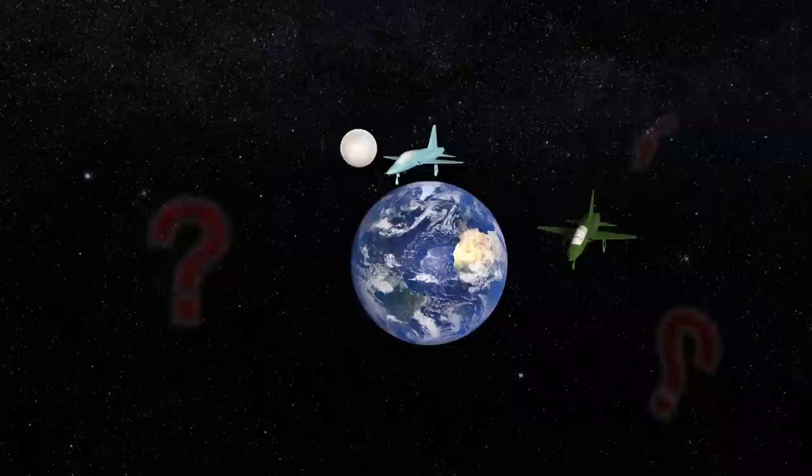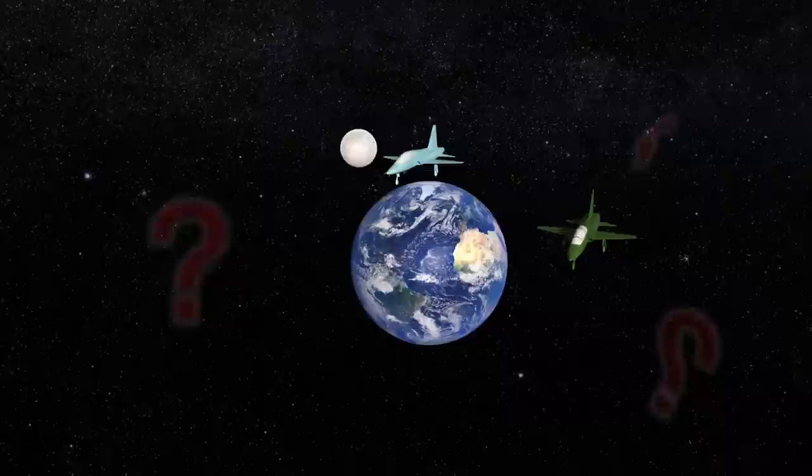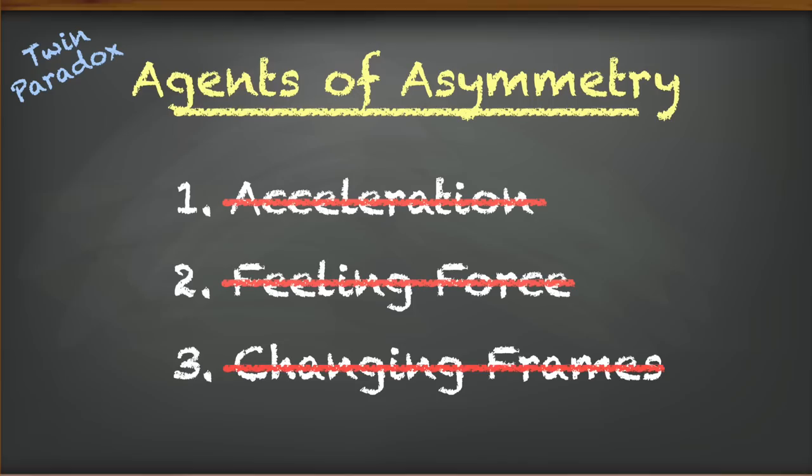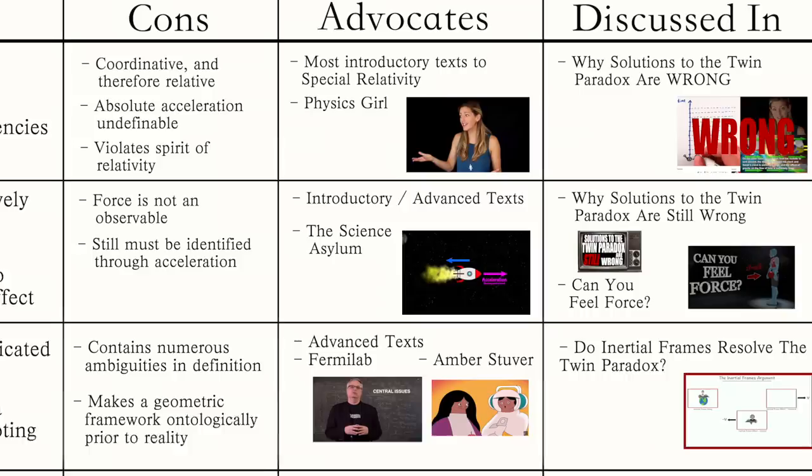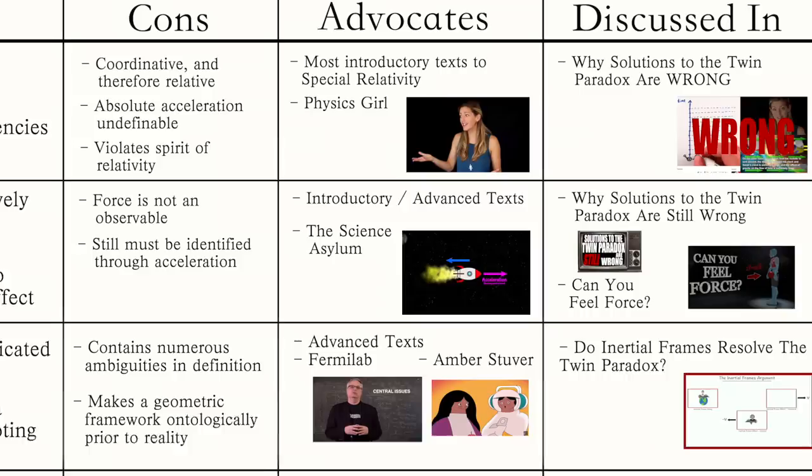So what does this all mean for the twin paradox? In one fell swoop, we can cross three popular answers – acceleration, feeling force, and changing frames – off from our list of possible agents of asymmetry for the paradox. All of these have been routinely offered up as candidates in the past, and it's nice to know that we can conclusively move beyond them. But that still leaves the ultimate question of what really breaks the symmetry? What truly resolves the paradox?